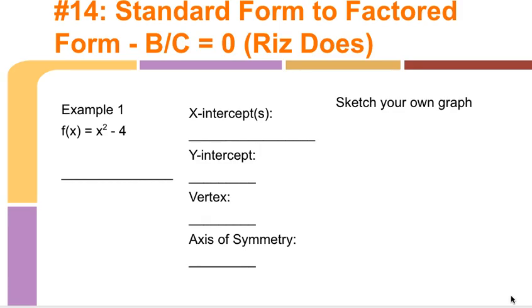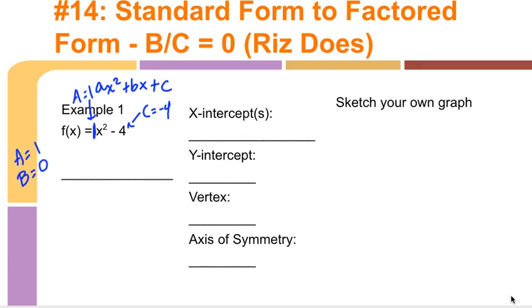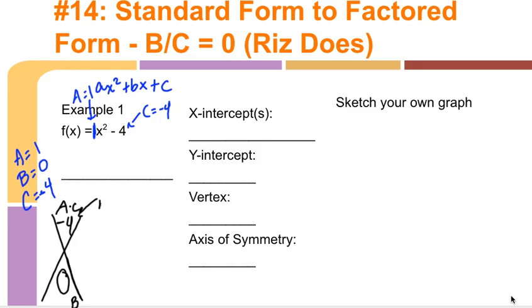Example one: f(x) = x² - 4. In ax² + bx + c, A is 1, there's no x term so B is 0, and the last term with no variable is C, so C equals negative 4. Setting up the diamond, the top is A times C, which is 1 times negative 4, giving negative 4. B is 0, which goes at the bottom.